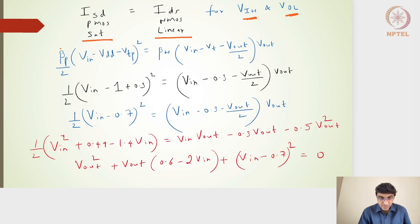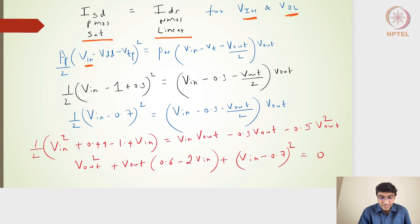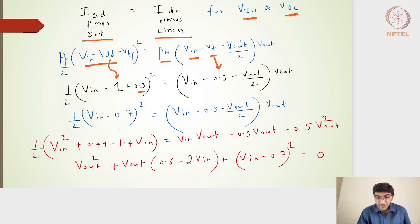The PMOS saturation current equation in inverter terms is: (βP/2) × (VIN − VDD − VTP)², where VTP = +0.3V and VDD = 1V. This is equated to the NMOS linear current: βN × [(VGS − VT) − VDS/2] × VDS, where VGS = VIN, VT = +0.3V, and VDS = VOUT since the source is grounded.